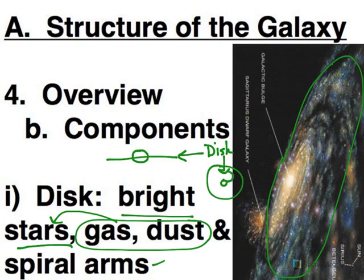So if I were to draw in our spiral arms, if we looked at our disk face-on, you would be able to see this spiral structure within the disk.